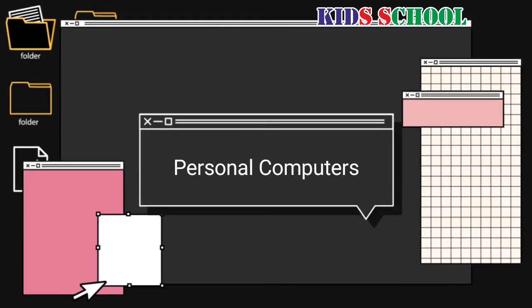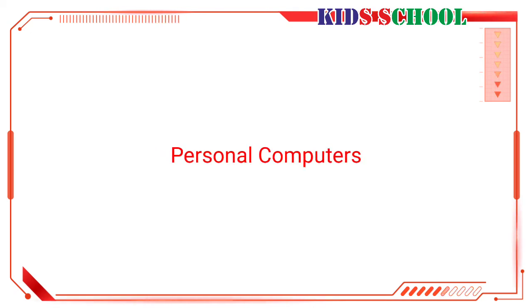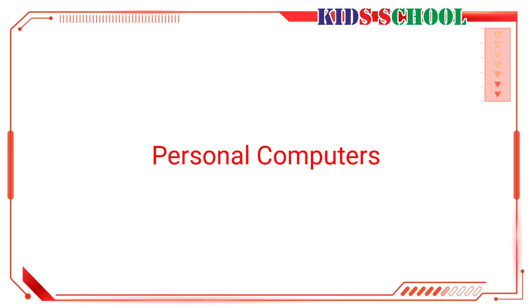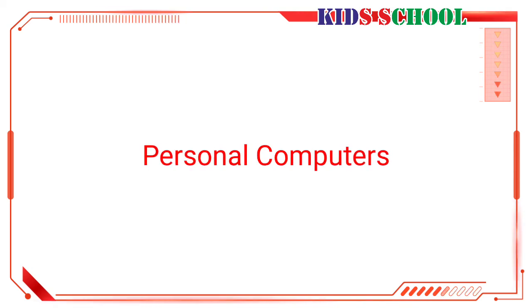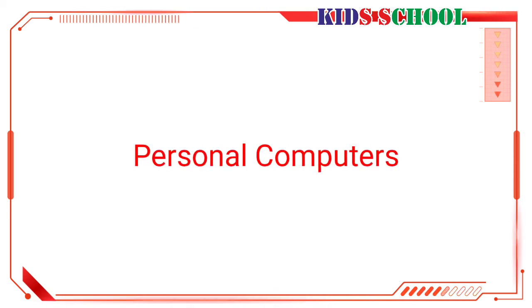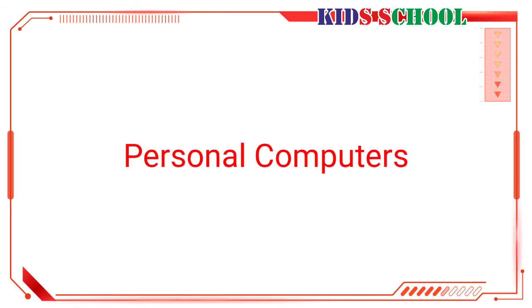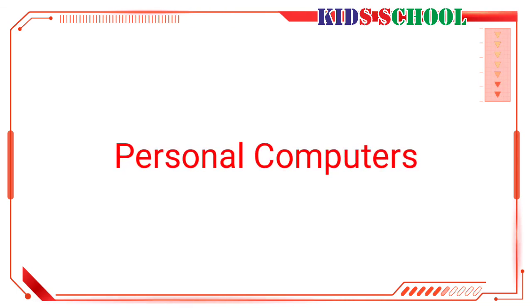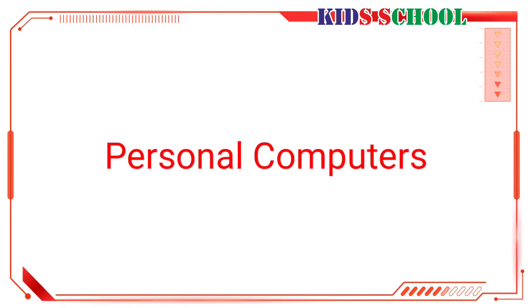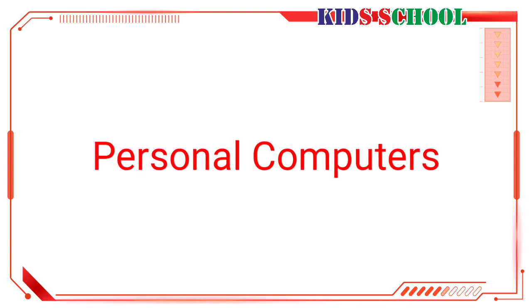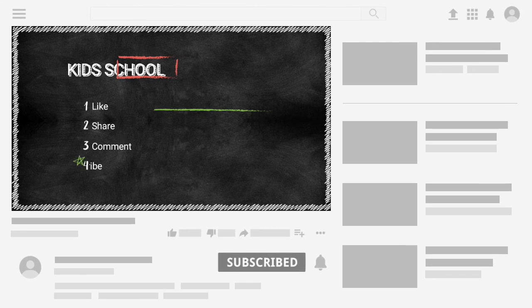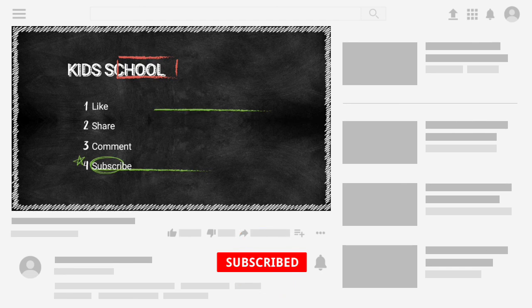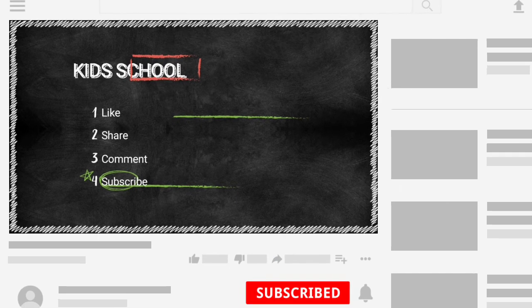Personal computers, or PCs, are also known as microcomputers. They are used in homes, offices, and schools. They cost less and only one person can use a PC at a time. PCs are used to create and store documents, maintain accounts, keep records of data, play games, and listen to music. A laptop computer is also a type of personal computer. In this video we have learned what a computer is, computer languages, and types of computers. In the next video, we will see the components of a computer.